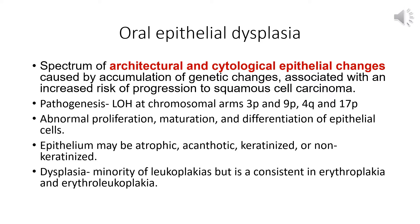These lesions also go by the name of intraepithelial neoplasia or squamous intraepithelial lesions. Some molecular markers are associated with the pathogenesis of oral epithelial dysplasia, most commonly loss of heterozygosity at chromosomal arms 3p and 9p, in addition to 4q and 17p. The histopathology includes abnormal proliferation, maturation, and differentiation of epithelial cells.